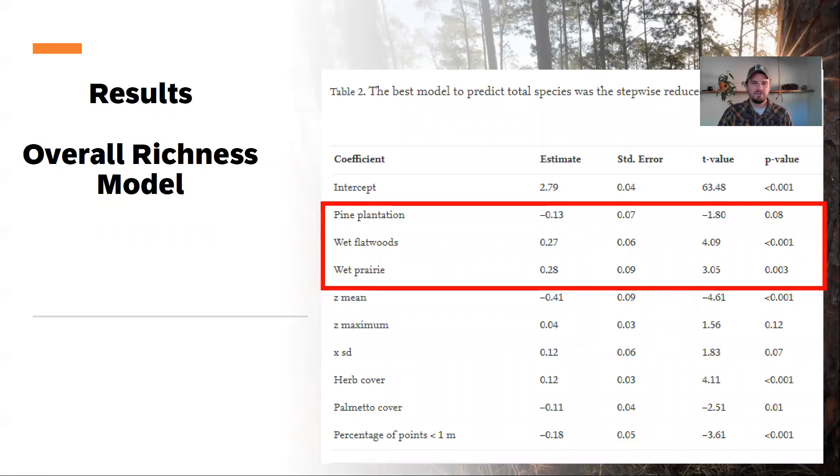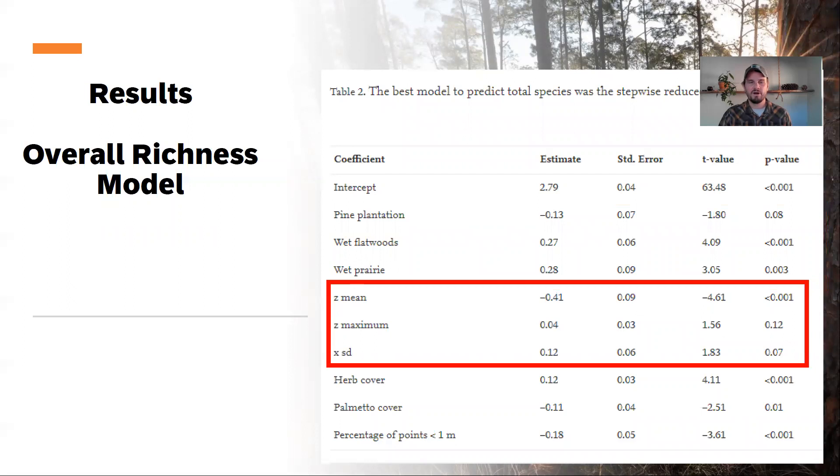In the model, the most important variables of that top model were, as seen here in the red box, the natural community type, followed by some LiDAR variables: Z-mean, so the height, the mean of the height of all the points, the maximum of the points. So really tall forests in this case had a positive effect on richness and the standard deviation of X. So moving away from the center of the plot, the standard deviation of that had a positive effect. So the more variability in that metric of horizontal distance from the center point of the plot had a positive effect.